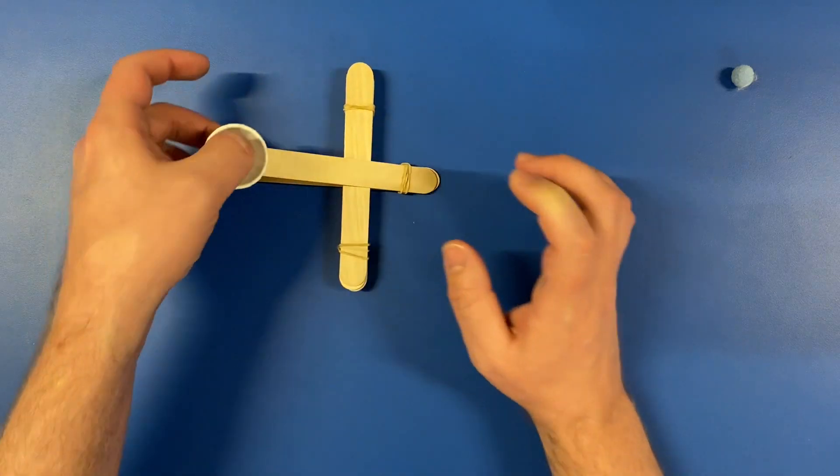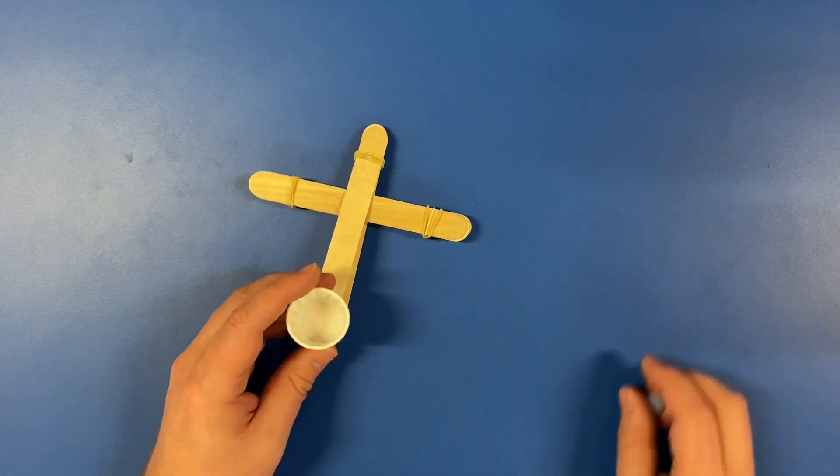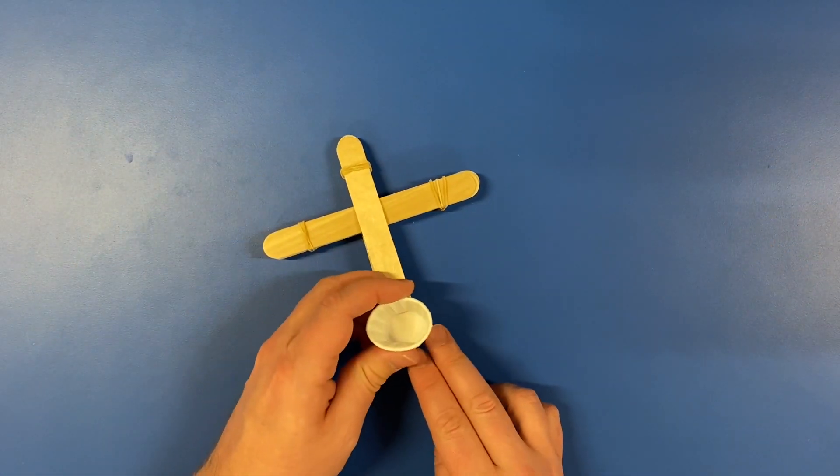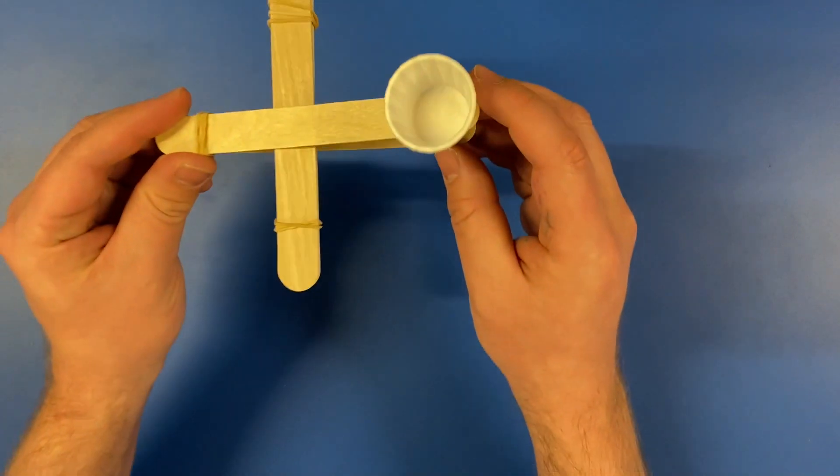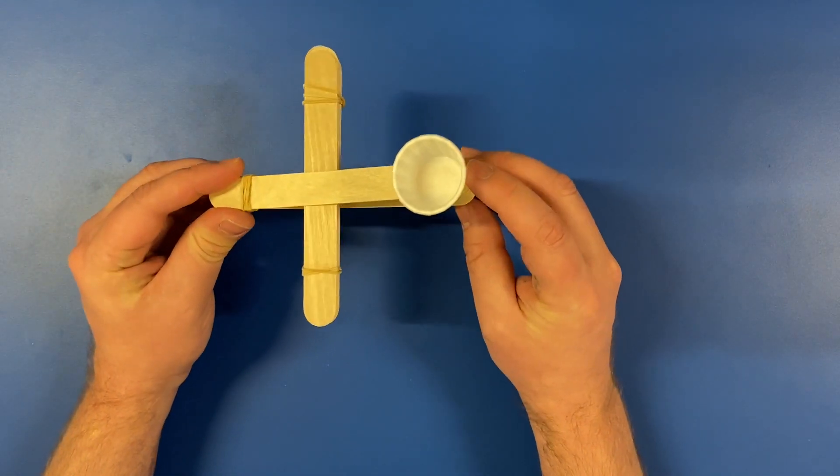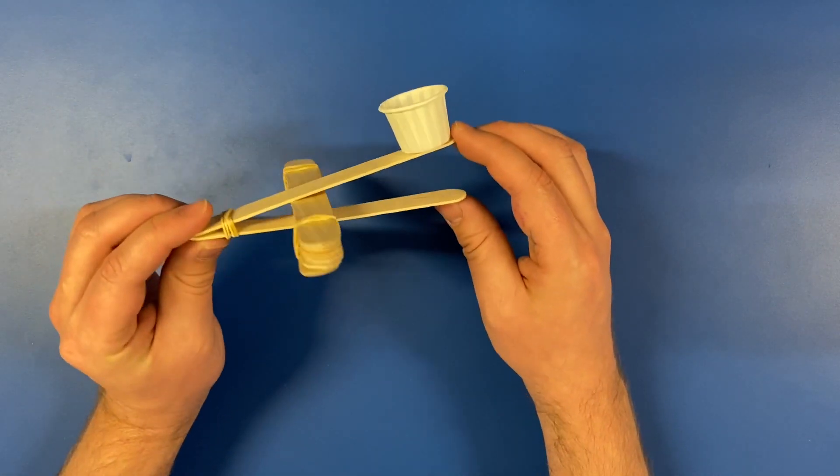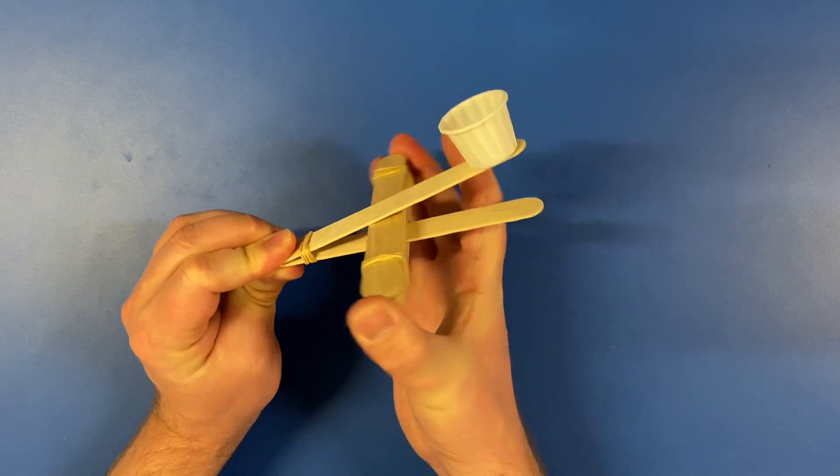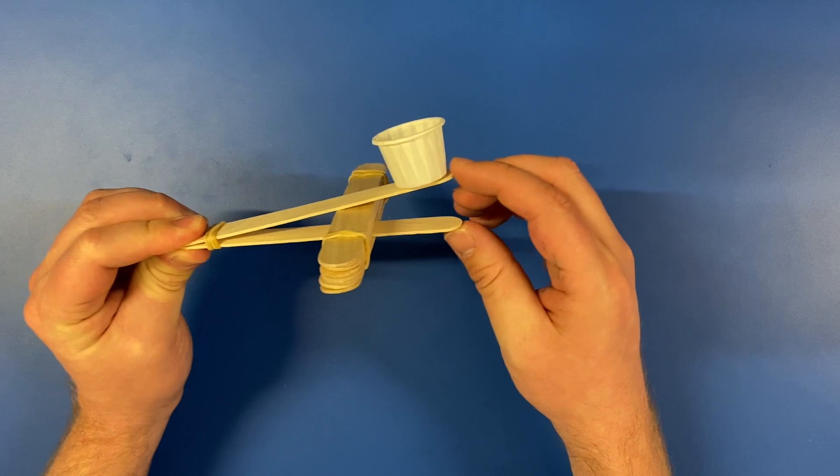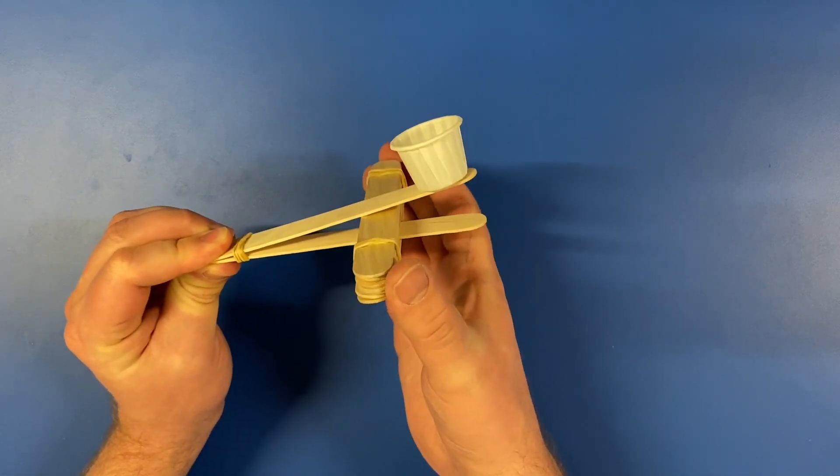That's it! You've made a catapult! Try it out! Oops, not like that! Also, make sure to try sliding the stack of tongue depressors back and forth. This will cause the launcher bucket to move at different angles. I wonder which is best for launching the little puffball.